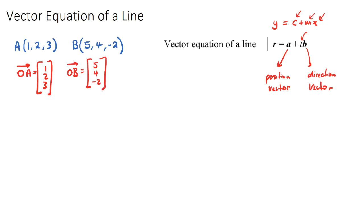So if we want to find the vector equation of the line that passes through A and B, we need two things. Some position vector. So it's some position that our vector will pass through, and it will pass through both A and B. So we can choose either OA or OB.